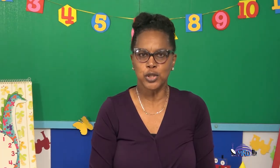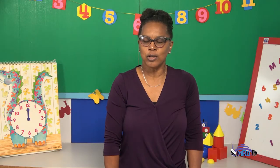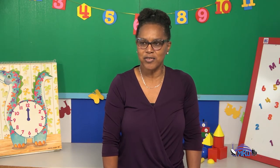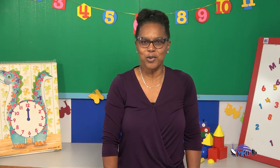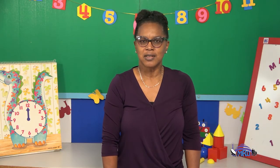Question number two: This clock has two hands and numbers. What type of clock is it? If you answered analog, you're correct. Very good. In which direction do the hands of the clock move? Both hands move in a clockwise direction. Great job.